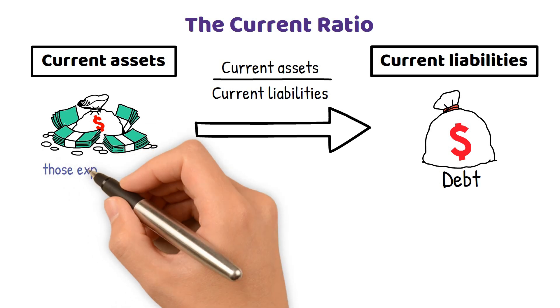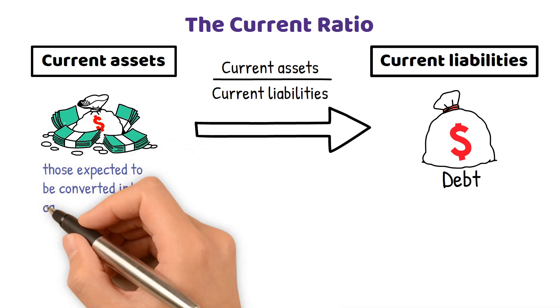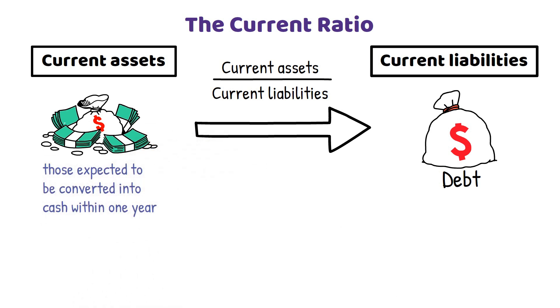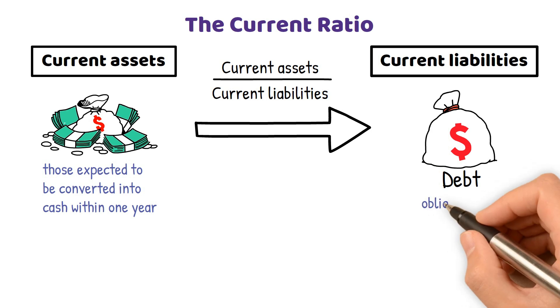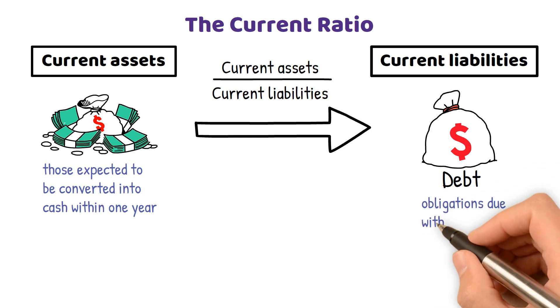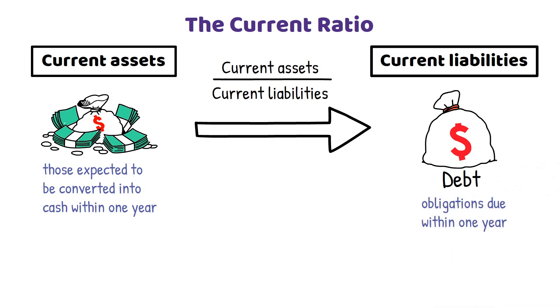Current assets are those expected to be converted into cash within one year or the company's operating cycle, whichever is longer. Current liabilities are obligations due within one year or the company's operating cycle, whichever is longer.